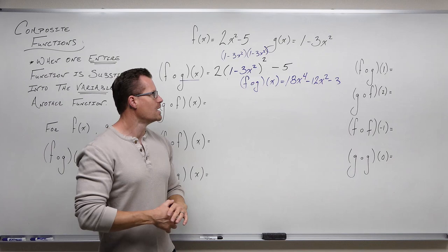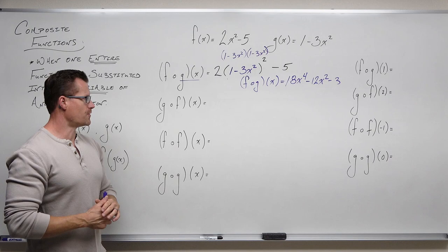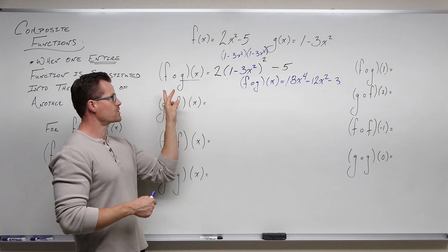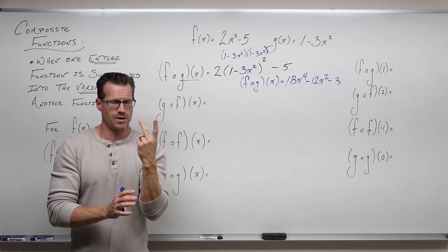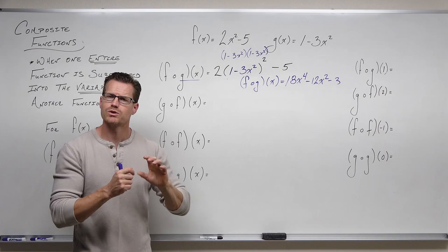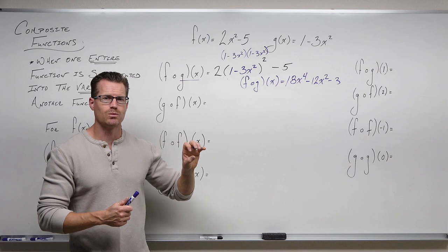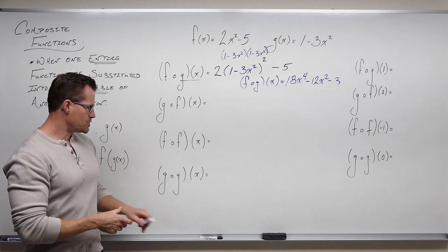We'll explore domain a lot more in the next video with more difficult compositions. Now let's look at g of f of x. Composition is not commutative in general — g of f of x will not be the same as f of g of x. The only exception is if your two functions are inverses of each other — if f of g equals g of f, those functions are inverses. In that special case, both compositions will just give you x, and that's how you test whether you have inverses. We'll see that in a future video.